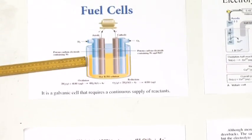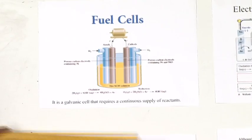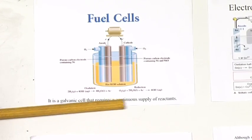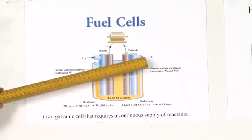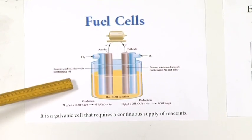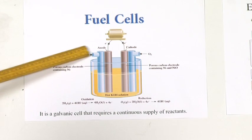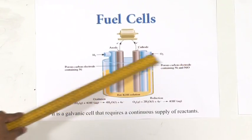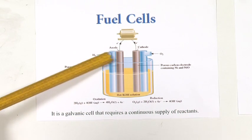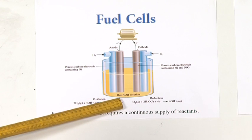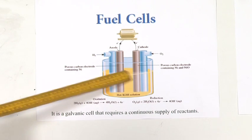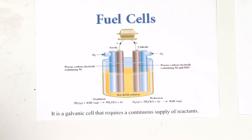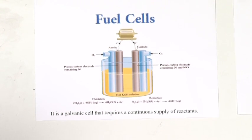The last topic is fuel cells, which are electrochemical cells. The difference from other cells is that fuel cells need a continuous supply of reactants — we keep feeding the cell with hydrogen and oxygen. Hydrogen is fed through one compartment and oxygen through another; these act as anode and cathode respectively. Hot KOH solution is used as electrolyte, and porous carbon electrodes containing nickel are used.